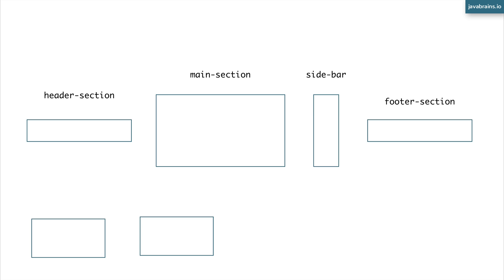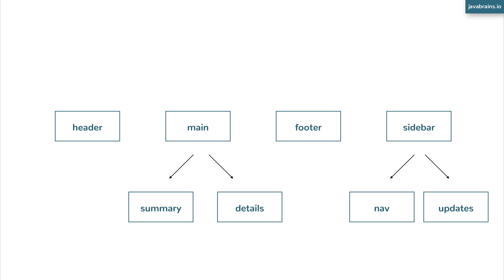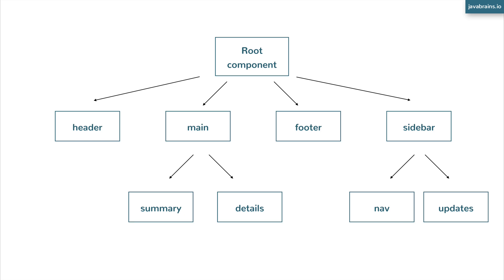These components could have sub-components. For instance, the main section or body section could have sections within it, and those can be components as well. So what you're looking at is kind of like a component tree. You have a header component, a main component which has two children — summary and detail — a footer component, and a sidebar component which might have a nav bar and an update section. A tree needs a starting point, and that starting point is a root component. Every Angular application is going to have a root component which holds the main components that need to be displayed, and those components can have child components and so on.